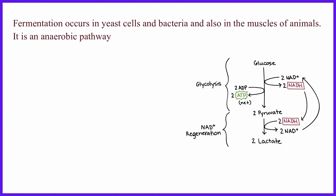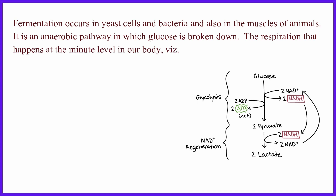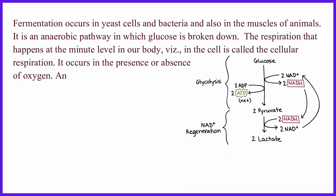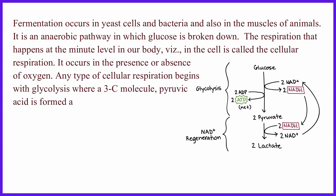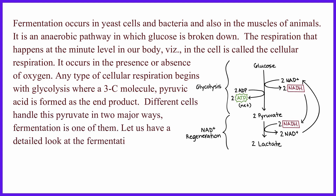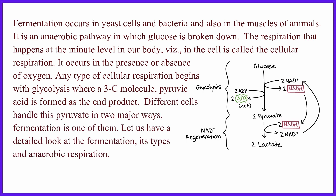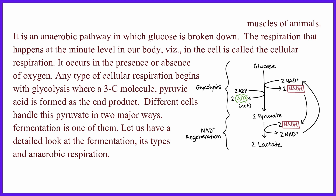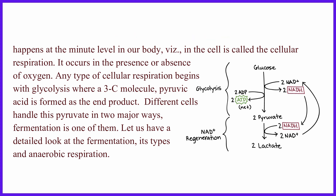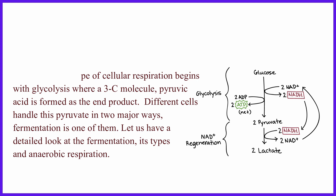Fermentation occurs in yeast cells and bacteria and also in the muscles of animals. It is an anaerobic pathway in which glucose is broken down. The respiration that happens at the minute level in our body, viz., in the cell, is called cellular respiration. It occurs in the presence or absence of oxygen. Any type of cellular respiration begins with glycolysis where a 3C molecule, pyruvic acid, is formed as the end product. Different cells handle this pyruvate in two major ways — fermentation is one of them.